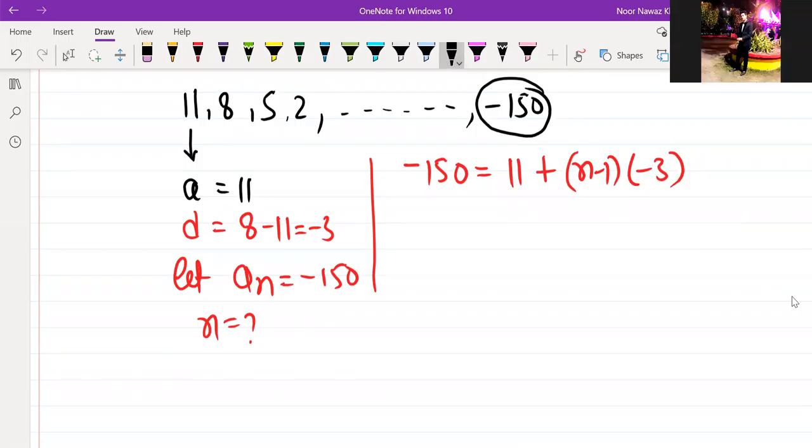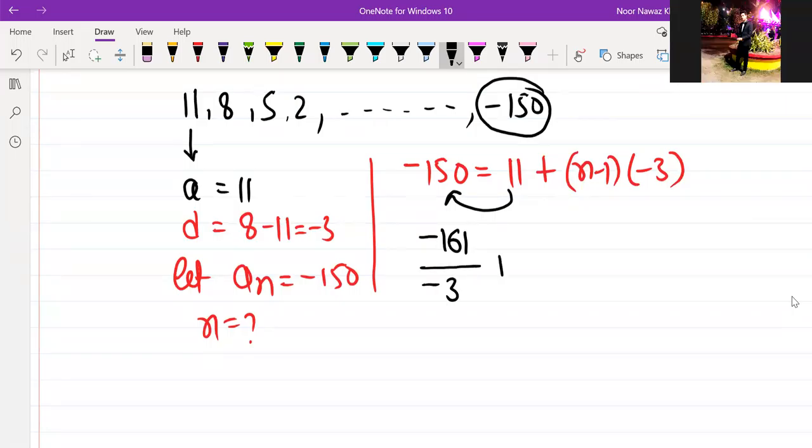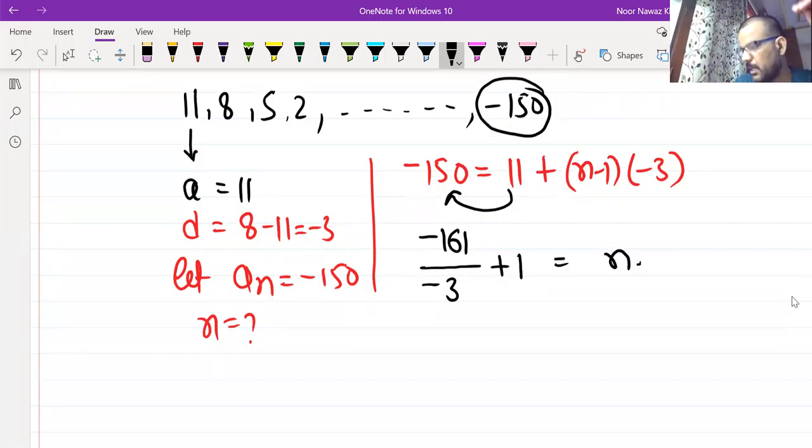Minus 150 minus 11. So, that will be our minus 161. Divide. So, that will be minus 3. So, this is my answer, N. Yes or no? All children, tell me. Yes.